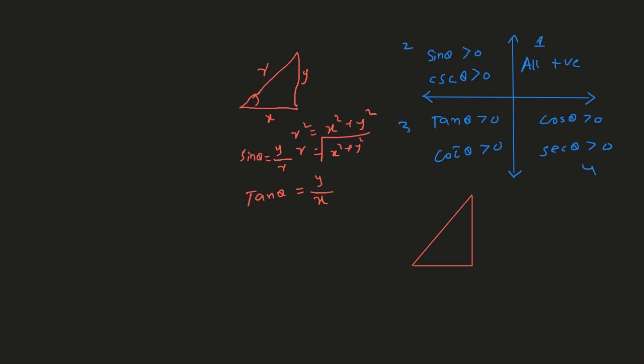Let's take another triangle in the second quadrant. In the second quadrant, the x-axis is negative and y is positive, so we take x as negative and y as positive. And r would be positive, because negative x squared is positive. Let's take sine of theta — sine of theta is perpendicular over hypotenuse, that is y over r. Because y is positive and r is positive, sine is positive.